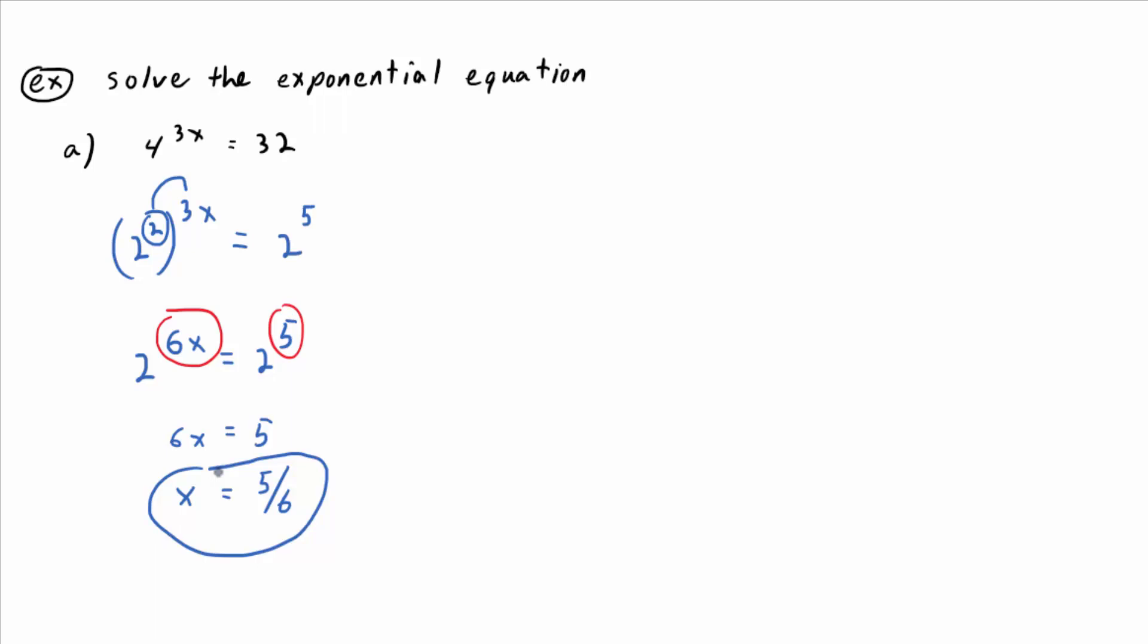Now, part A begs the question, what if you can't write both sides with the same base? What do you do? So let's look at part B.